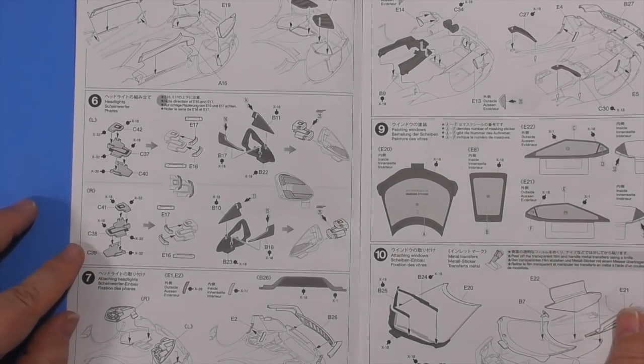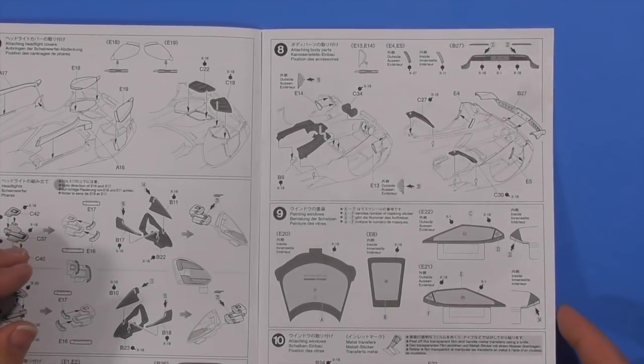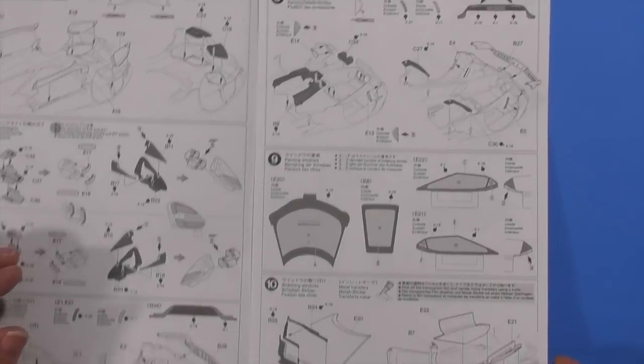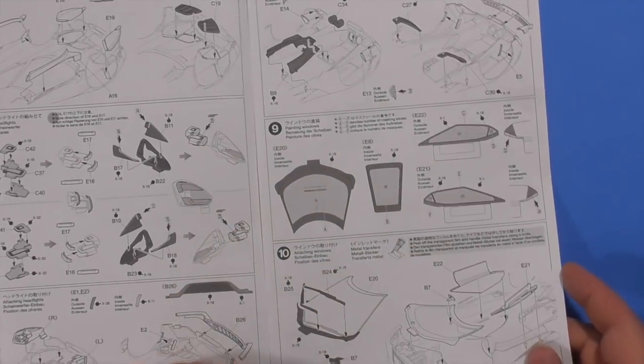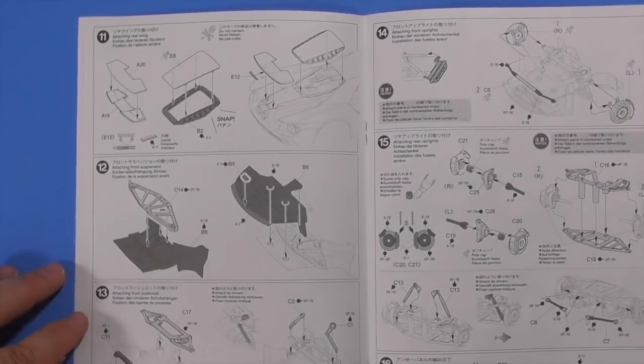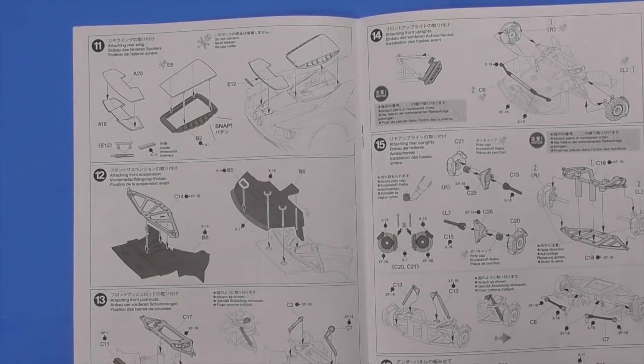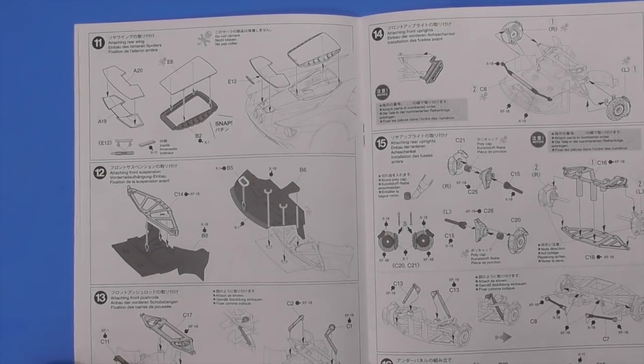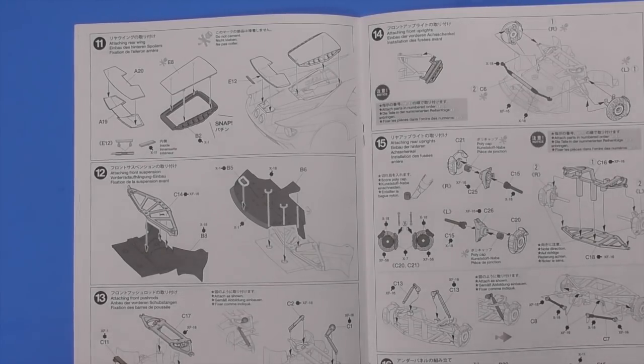We've got headlight covers, attaching the headlights. More body parts. Painting the windows. You've got the masks, of course. Windshield wipers. Inserting the windows, of course, after everything's painted. Back window. I used to make this just flat black. I'm not sure if it's... Yeah, it looks flat black in the pictures.